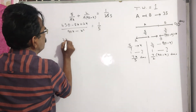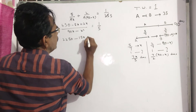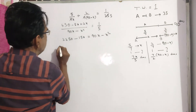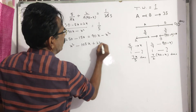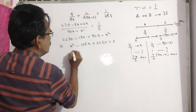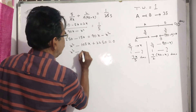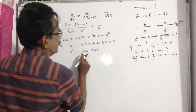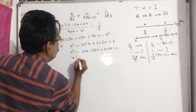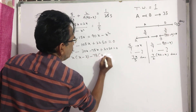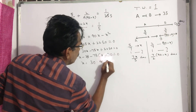Expanding: 5 into 450 minus 3X equals 90X minus X squared, giving 2250 minus 15X equals 90X minus X squared. This implies X squared minus 105X plus 2250 equals 0. Factoring: (X minus 30)(X minus 75) equals 0, so X equals 30 or X equals 75.